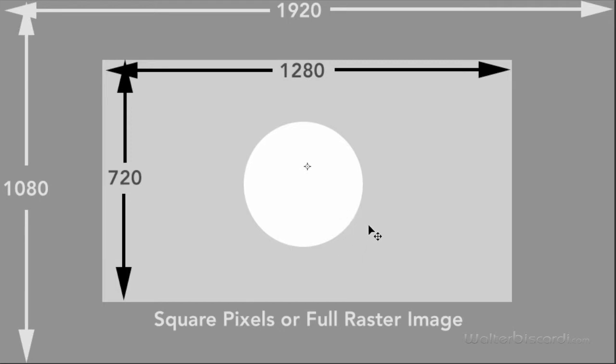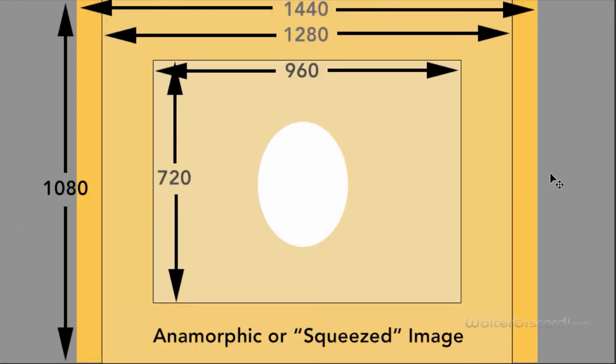Now, let's switch over to anamorphic, and here's the anamorphic sizes. For 720p, it's quite easy. The anamorphic size is always 960 pixels wide, still 720 high. The image has been squeezed in. You can see our circle is now an oblong egg.